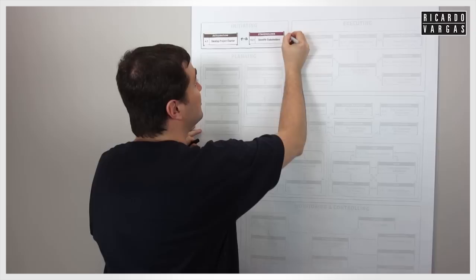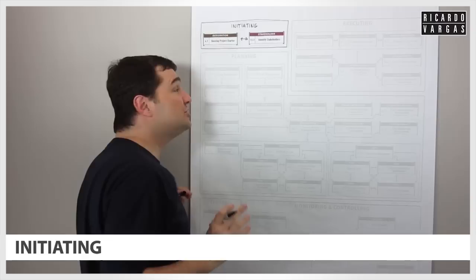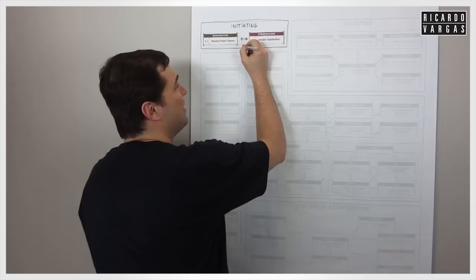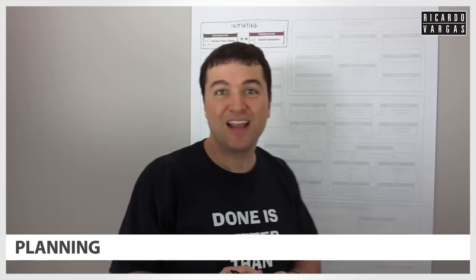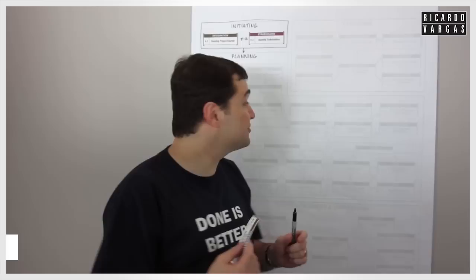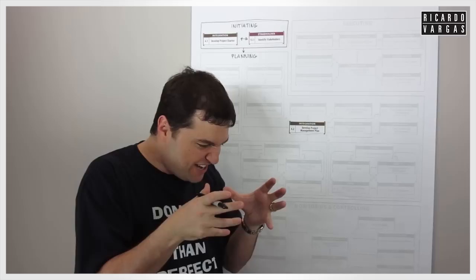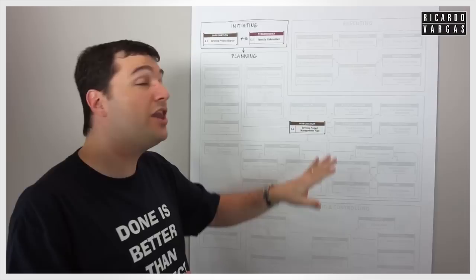This is what I call the initiating process. As soon as I finish this, I need to start planning my project, which drives us to the planning process. I want to plan this project, and I'll start by developing the project management plan. Integration is a very critical process — it's something like the glue that puts together all the other areas. But in order to do this, I need to do a lot of other things.